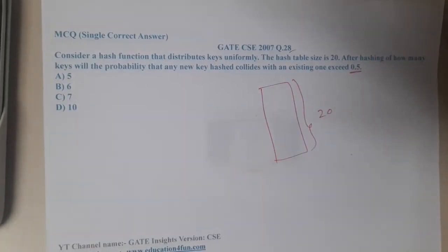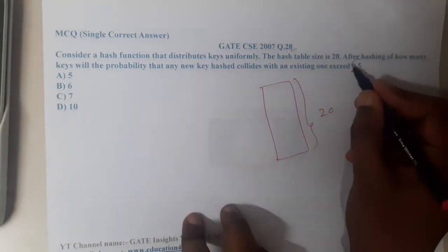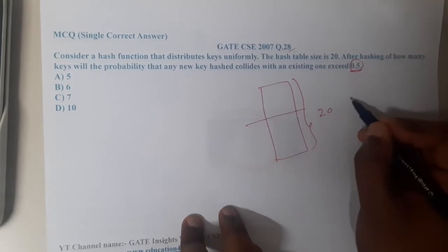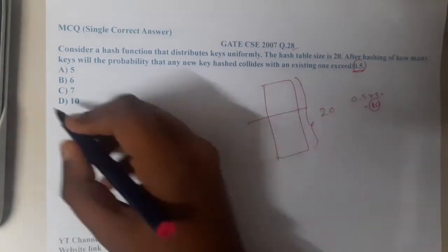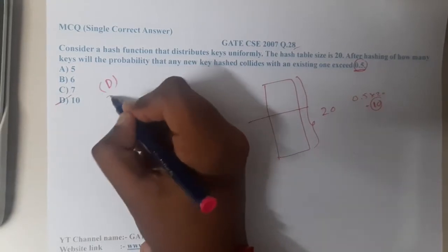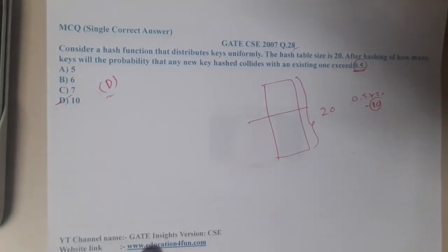This question can be done with logical thinking or with the help of probability. To get 0.5 probability of collision, how many elements should be filled? Exactly 0.5 into 20, that is nothing but 10 elements should be filled. So the answer could be directly 10. That is the simple trick.